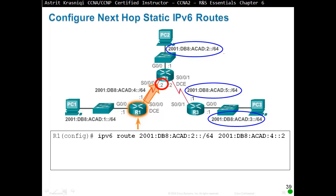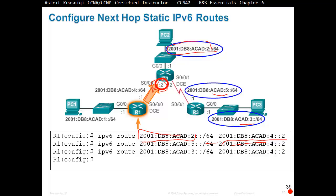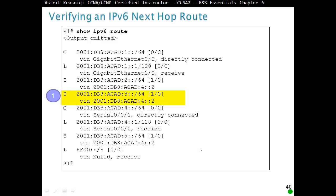Configure next hop static routes for IPv6 — for example: 'ipv6 route 2001:DB8:ACAD:2::/64 2001:DB8:ACAD:4::2', which routes to that network via the IPv6 address of Router 2. Same for ACAD5 and ACAD3 networks. When we do 'show ipv6 route', we can see the route: 2001:DB8:ACAD:3::/64 with administrative distance of 1, going via the neighbor's IPv6 address. If CEF is disabled, we put our exit interface in the static route.